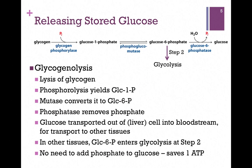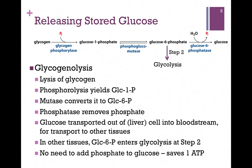What about retrieving glucose after we've stored it? That process is referred to as glycogenolysis — lysis of glycogen. Rather than a simple hydrolysis, it's a phosphorolysis carried out by the enzyme glycogen phosphorylase, which adds inorganic phosphate to release glucose 1-phosphate. The mutase enzyme, which is readily reversible, then converts glucose 1-phosphate to glucose 6-phosphate. If we're in the liver and need to transport glucose to other cells, we clip off that last phosphate to produce free glucose, because we have glucose transporters but not glucose 6-phosphate transporters.